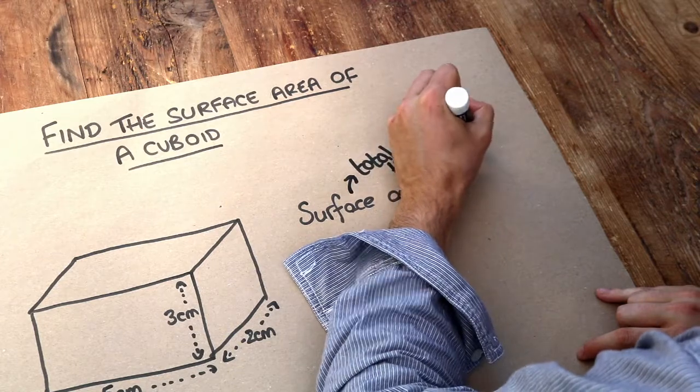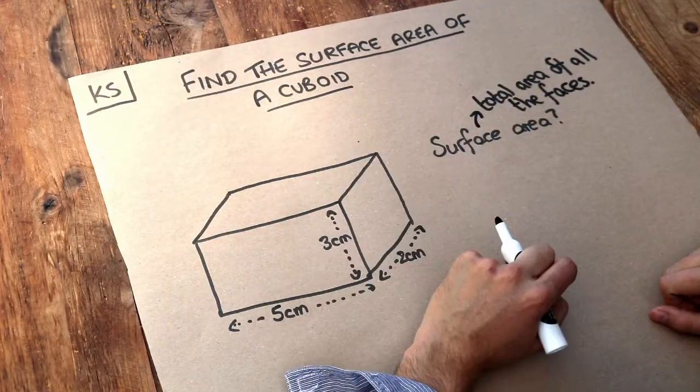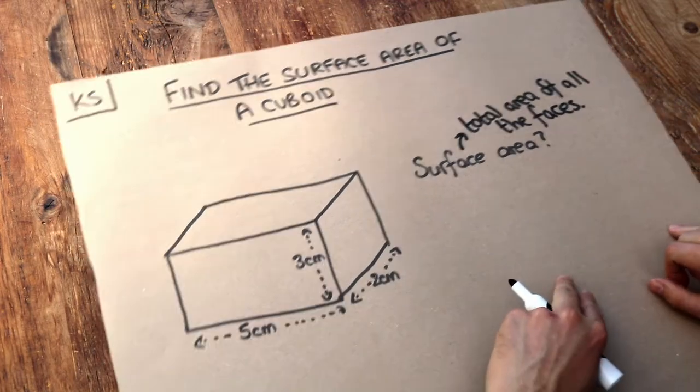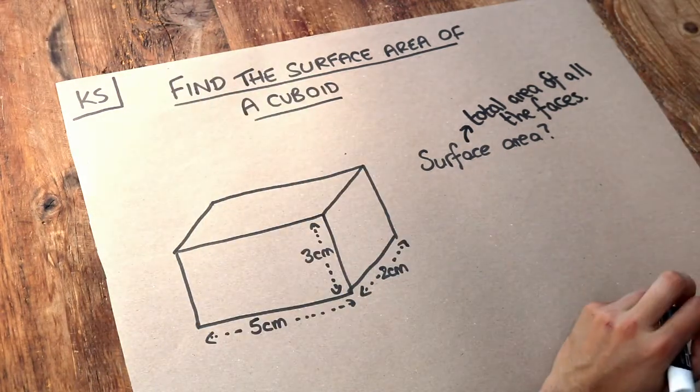So imagine that you are buying some wrapping paper to wrap a present which was in the shape of a cuboid. The surface area would tell you how much wrapping paper you would need to cover all the faces of your present.